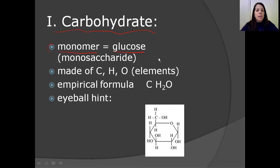So those are the elements. And its empirical formula is CH2O. That means that it always has a ratio of 1 to 2 to 1. Now, when you're looking at a page of a whole bunch of different molecules, how do you know what a carbohydrate is? I have an eyeball hint for you. What you want to do is you want to look for this skeleton here that I'm outlining in red. Whenever you see that outline there, that will tell you that you are looking at a carbohydrate.